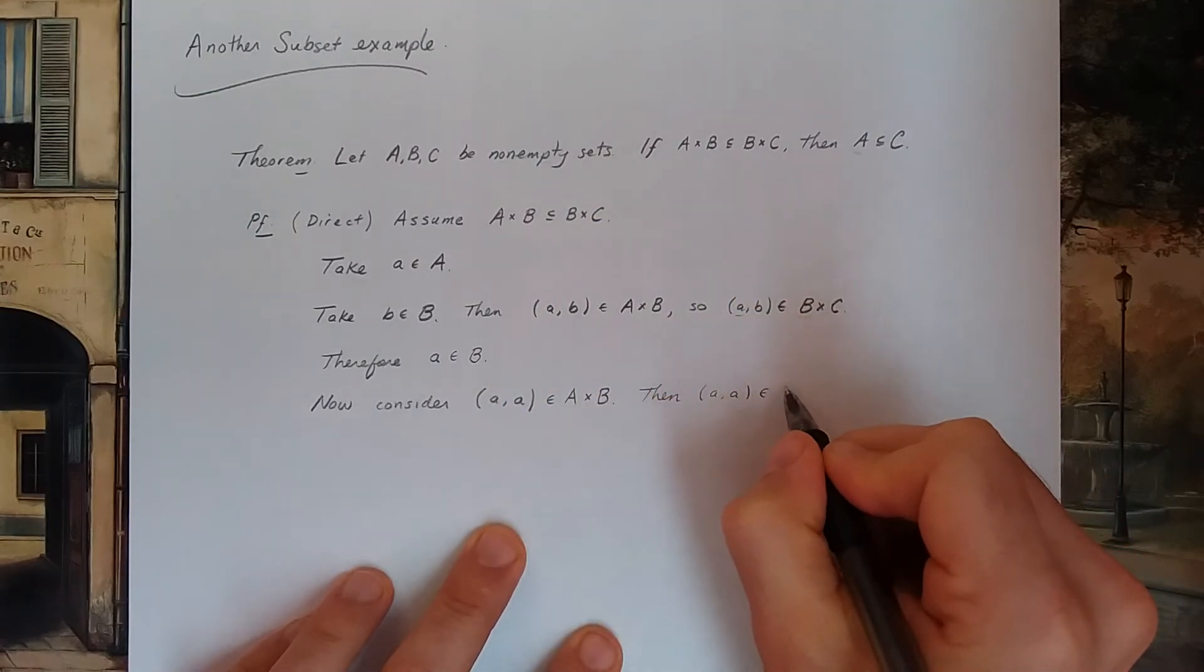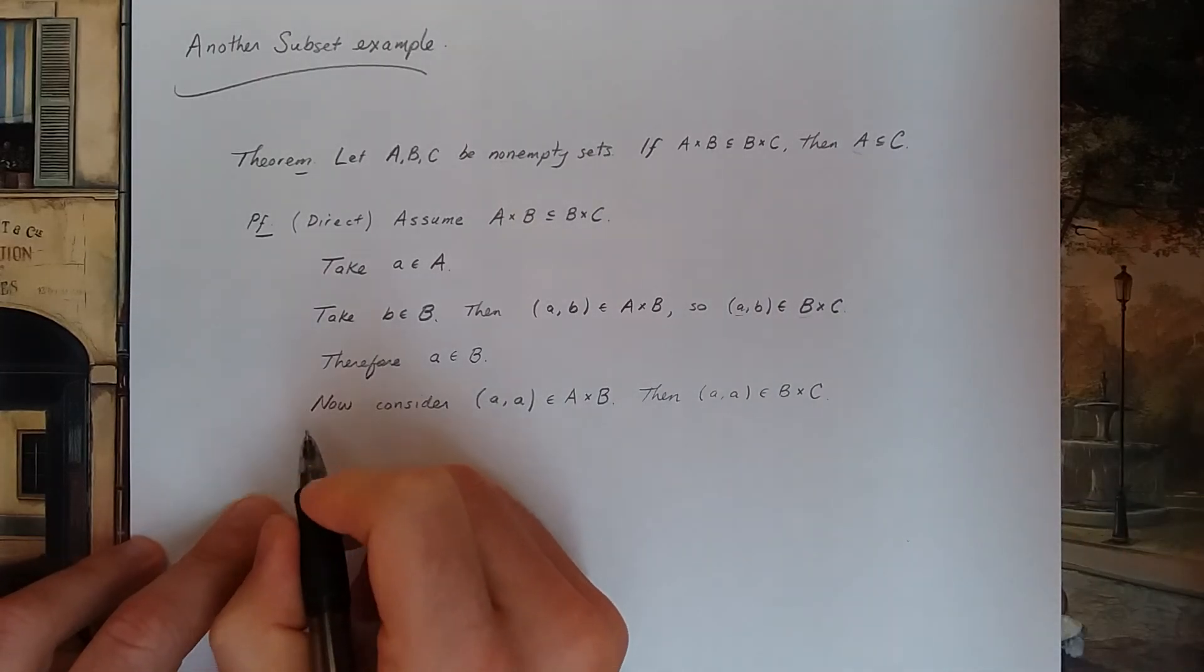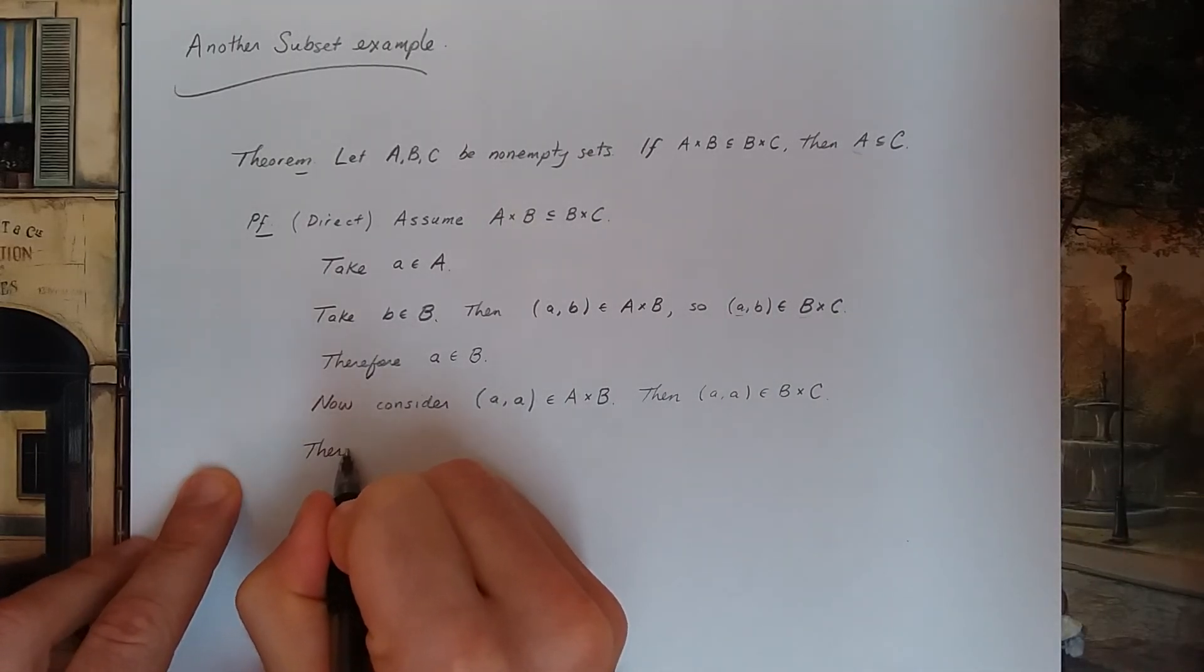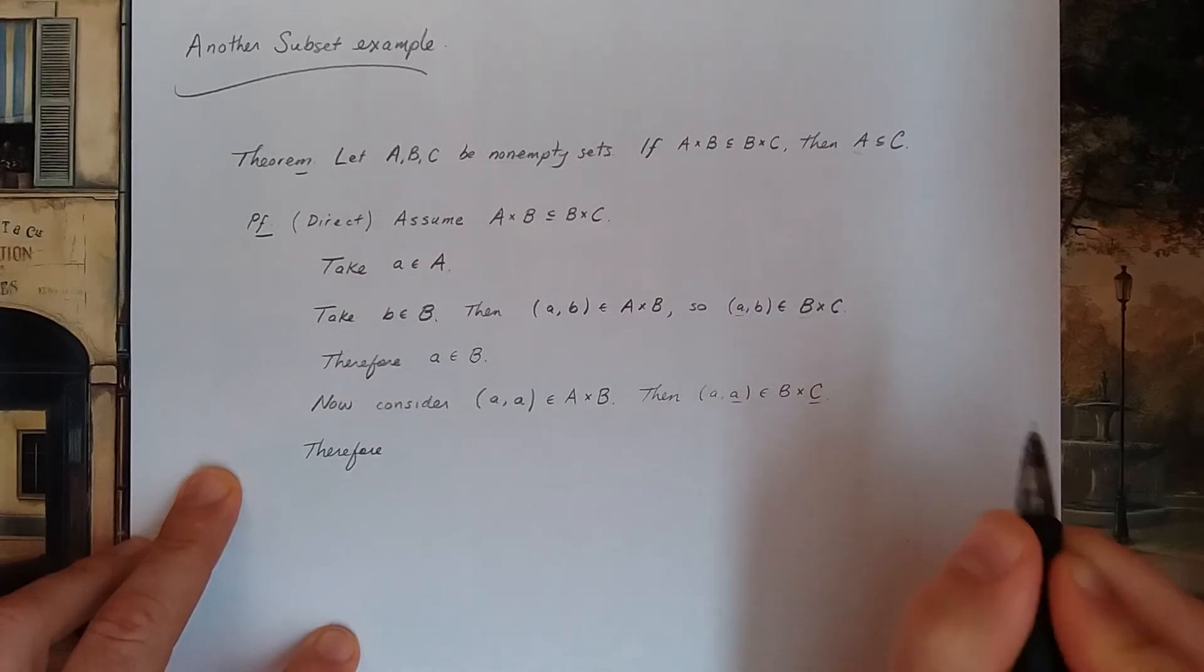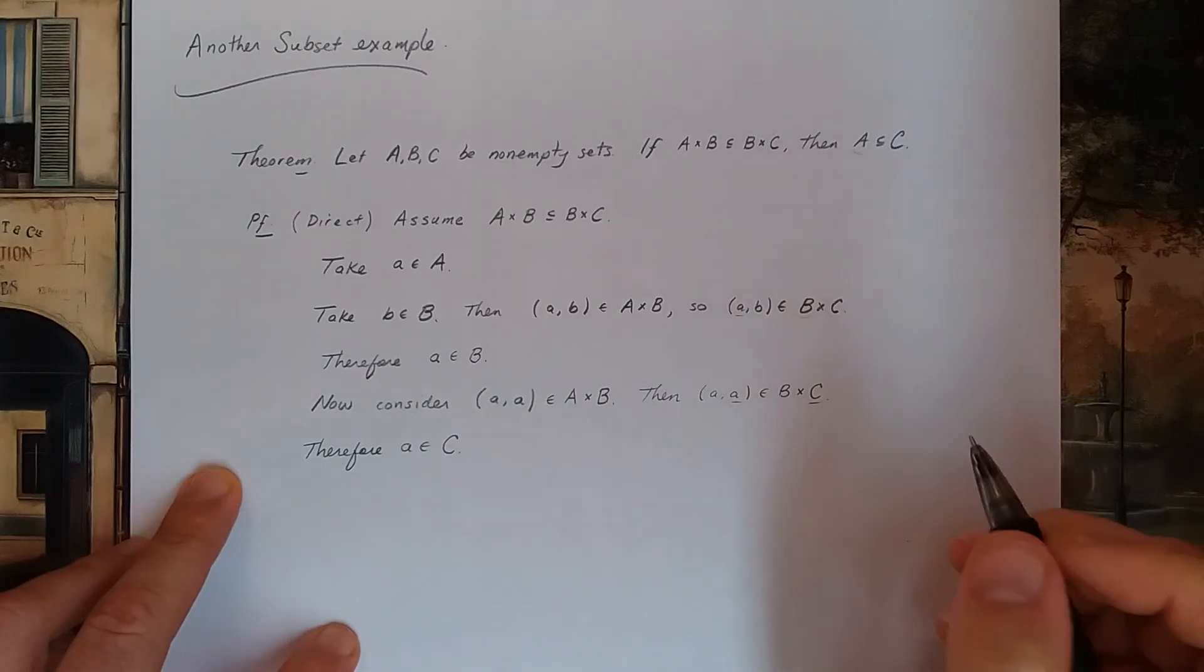My goal is to prove that A is a subset of C. So to prove subsets, the idea is you take an element in the first set and show it has to be an element in the second set.